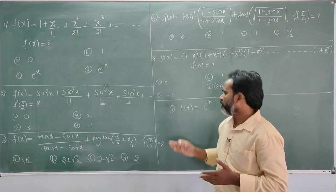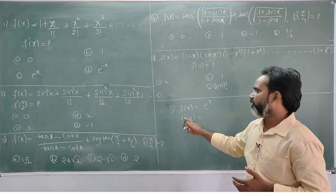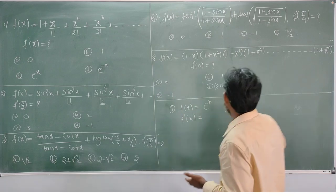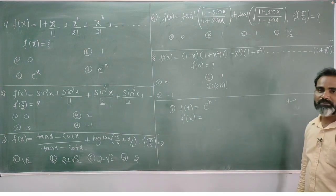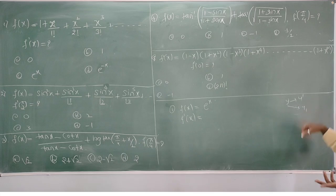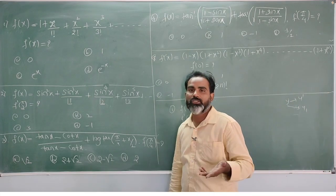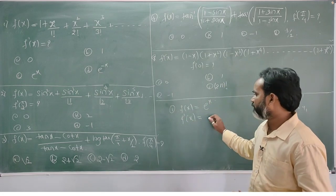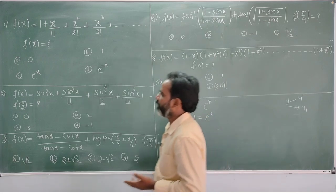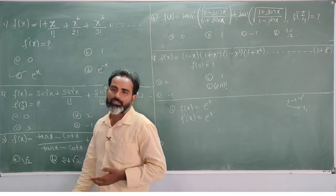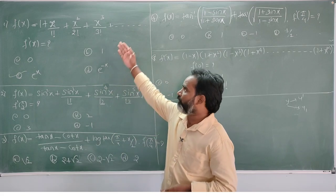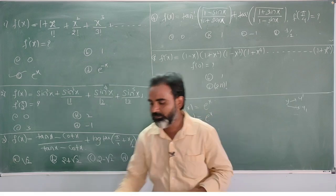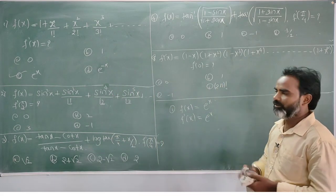So what is the differentiation of this? The differentiation will be f dash of x. You can write d y by d x, or y dash, or y1 — all indicate differentiation. What is the differentiation of e power of x? That gives e power of x. Option C is correct. Just remember this directly: e power of x.